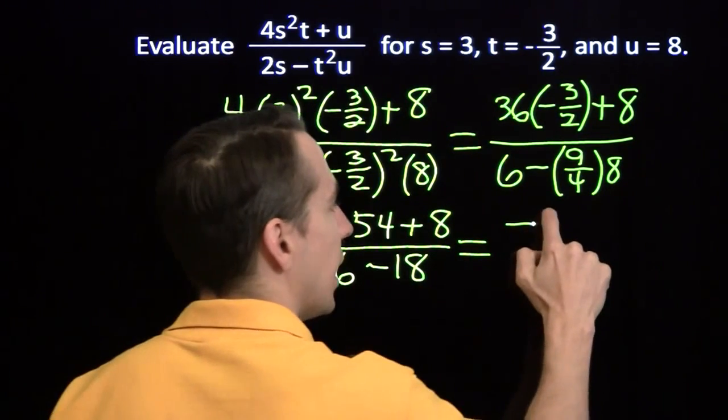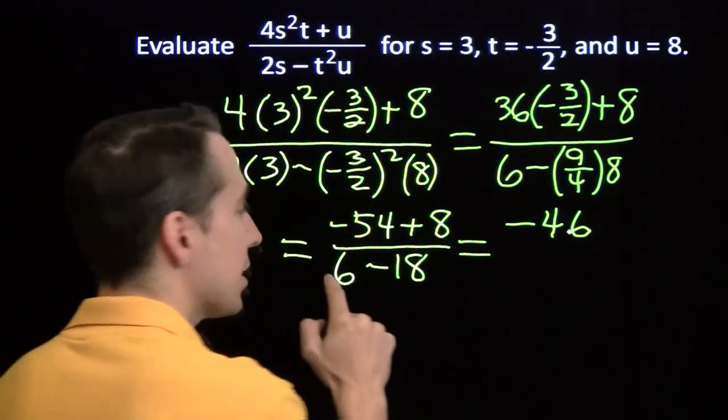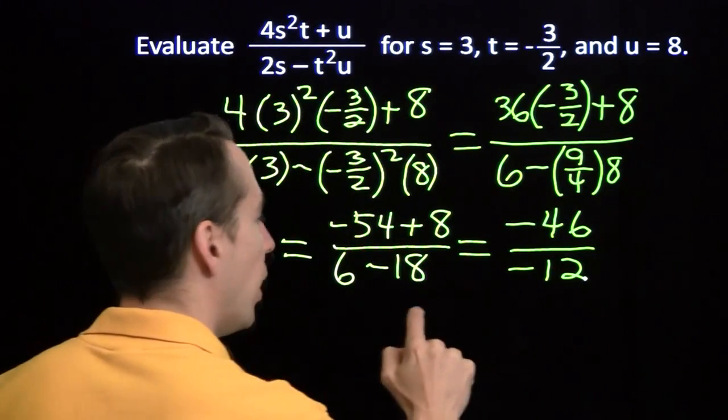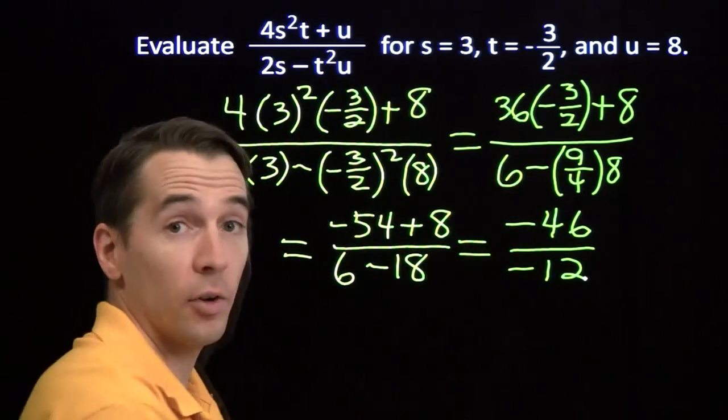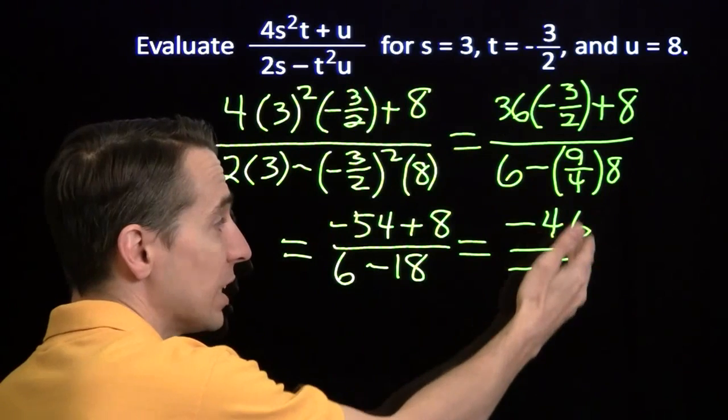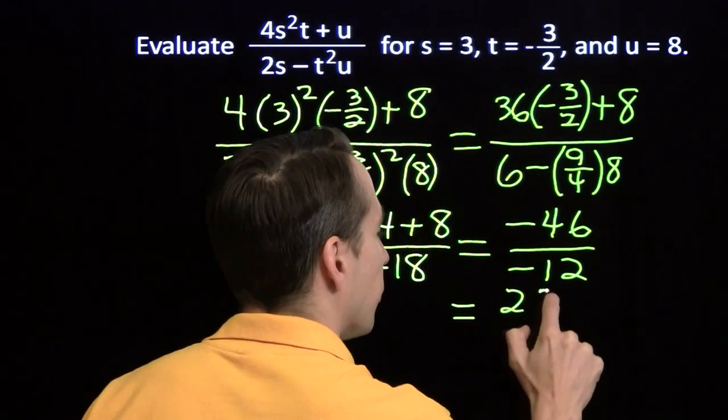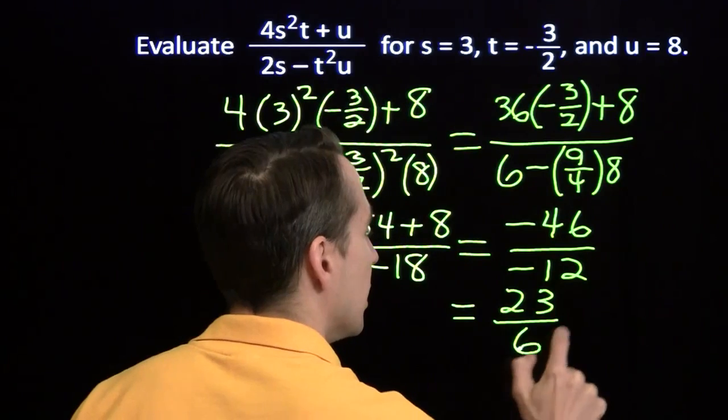Now it just keeps getting easier and easier. Negative 54 plus 8 gives us negative 46. 6 minus 18 gives us negative 12. And then we can simplify this negative over negative. That gives us a positive. We can take out a common factor of 2 in the top and the bottom, and we're left with 23 sixths.